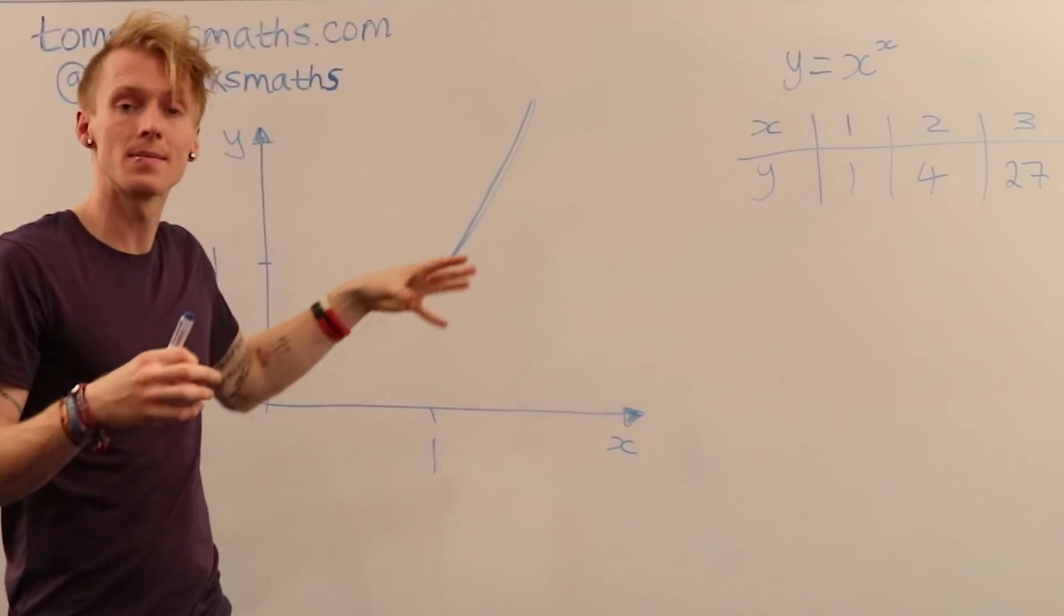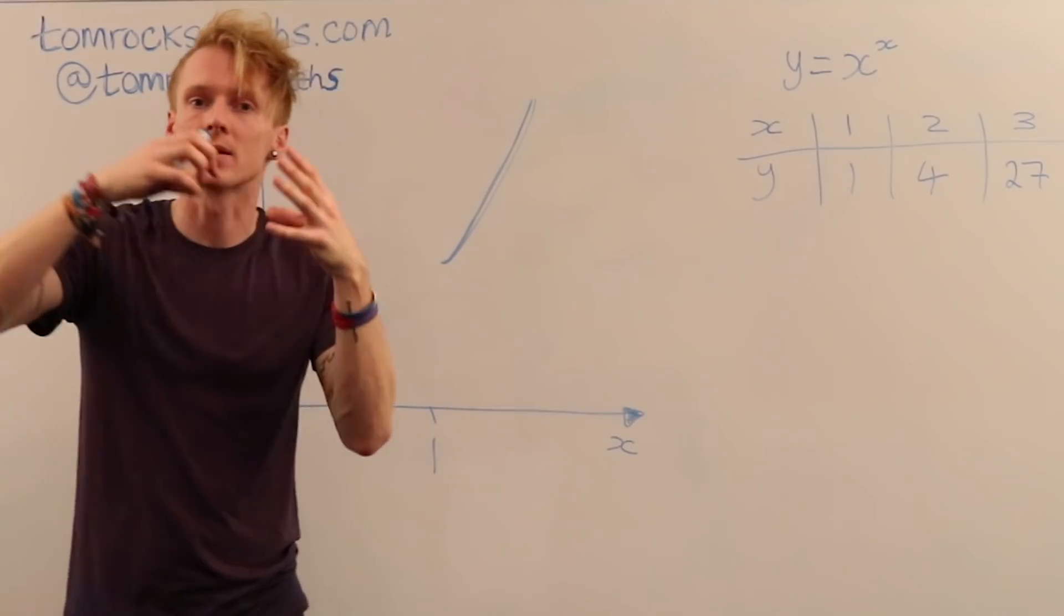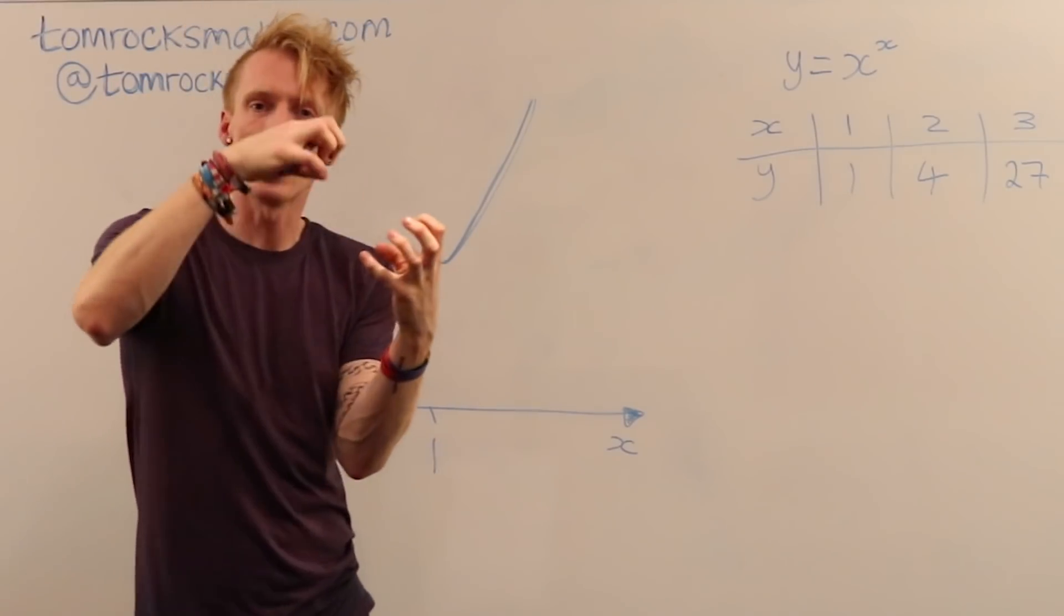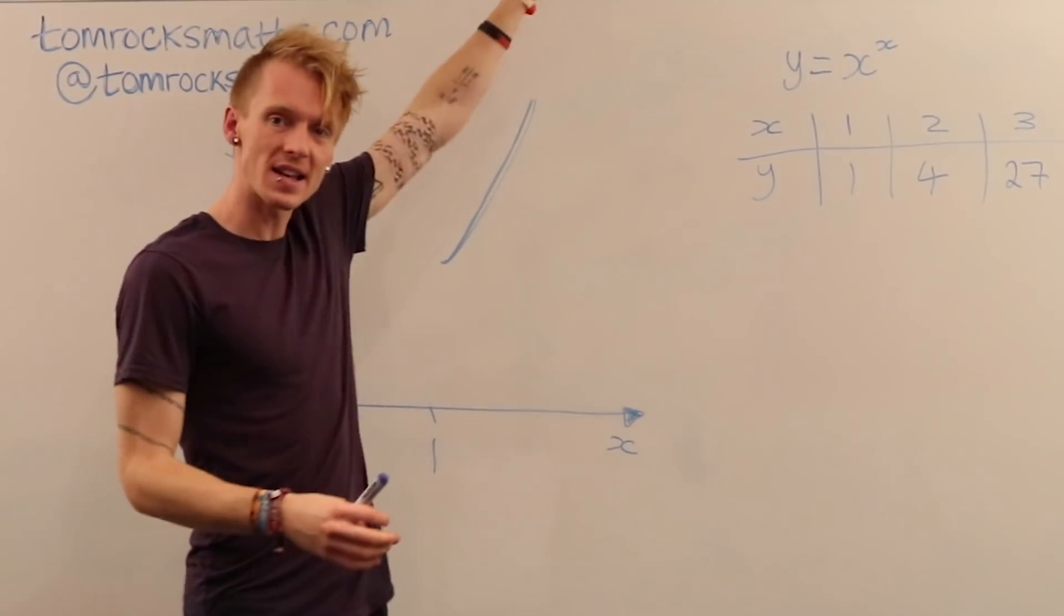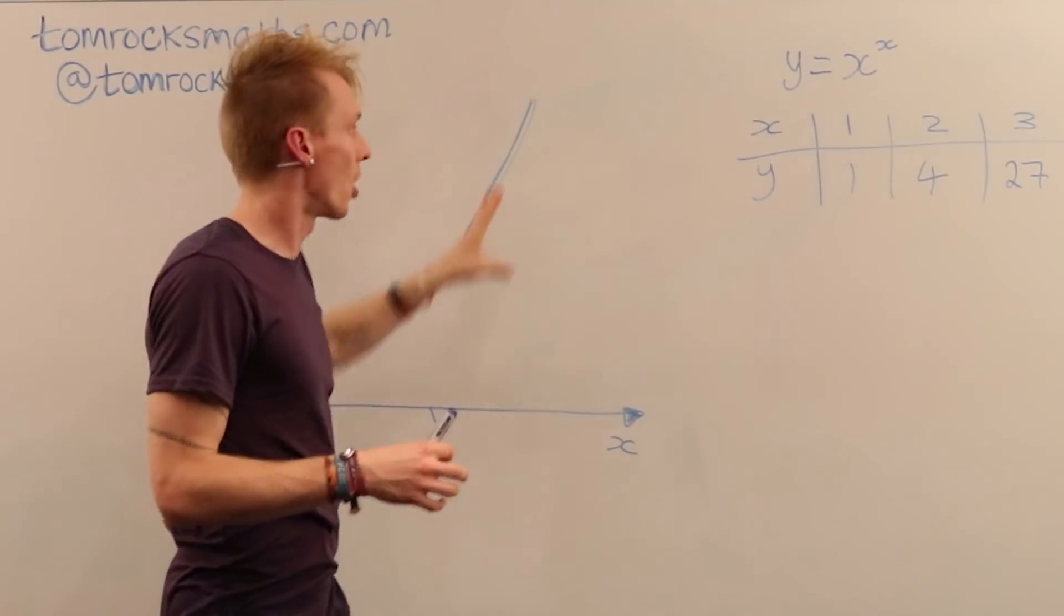So this is very similar to the graphs of y equals x cubed, y equals x to the fourth. As the power of x is increasing, the graph shoots up faster and faster towards infinity.